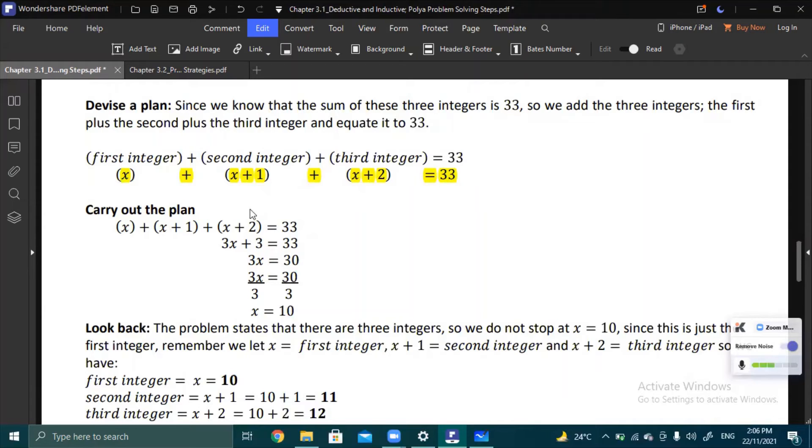To simplify further, we transpose the 3 to the other side of the equal sign. It's positive here, so it becomes minus when we move it across. We get 3x equals 33 minus 3. We need to isolate x, so we simplify by dividing the whole equation by 3 to cancel the 3. The answer is x equals 10.